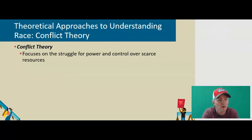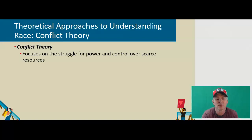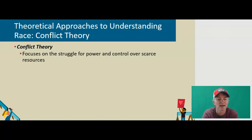Conflict theory, of course, focuses on the struggle for power and control over scarce resources. Early conflict theorists tried to explain race as a result of economic oppression. The theory states that racial and ethnic differences create inter-group conflict. Minority and majority groups have different interests and may find themselves at odds as they attempt to secure and protect them. This is the struggle between those that have the means of production and those that do not.